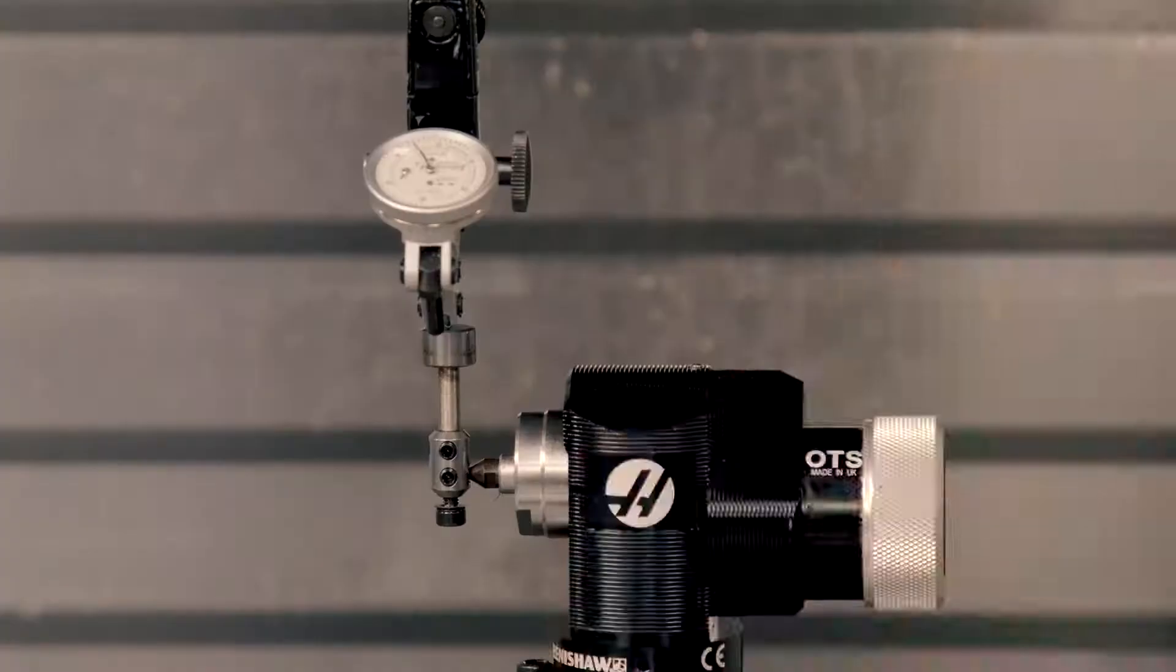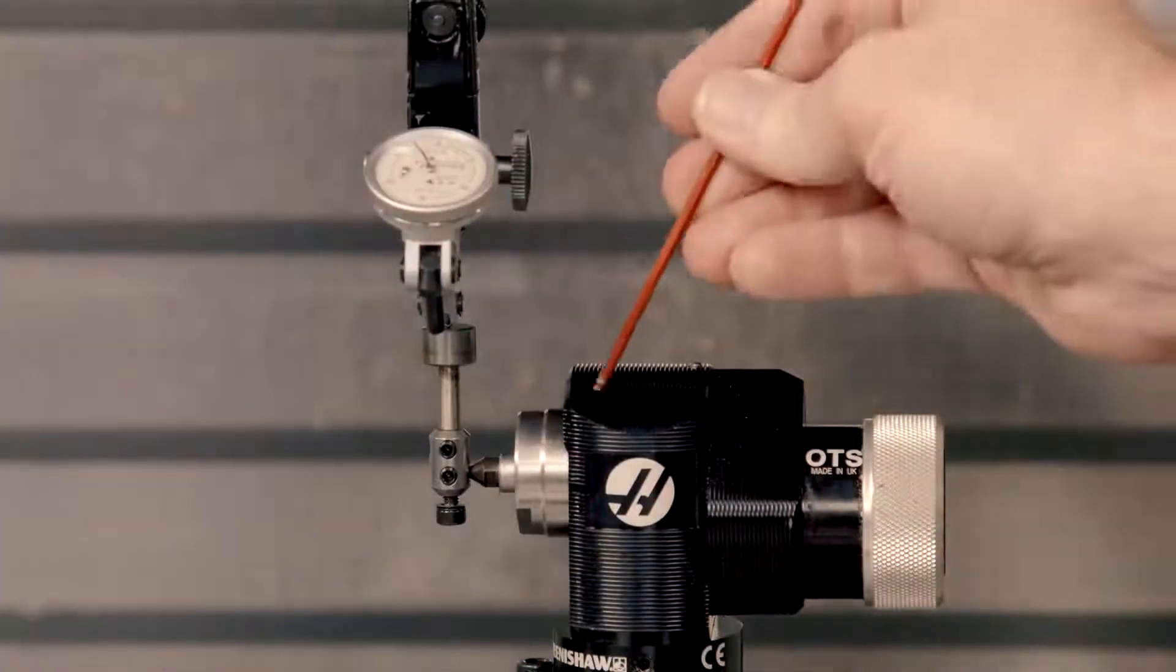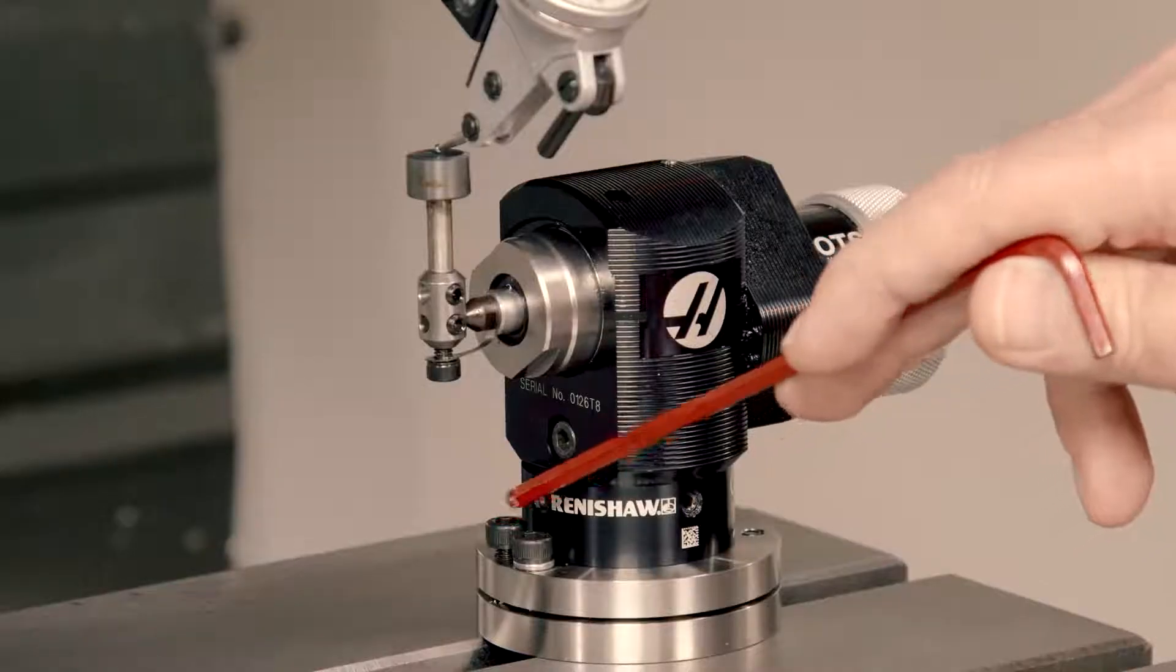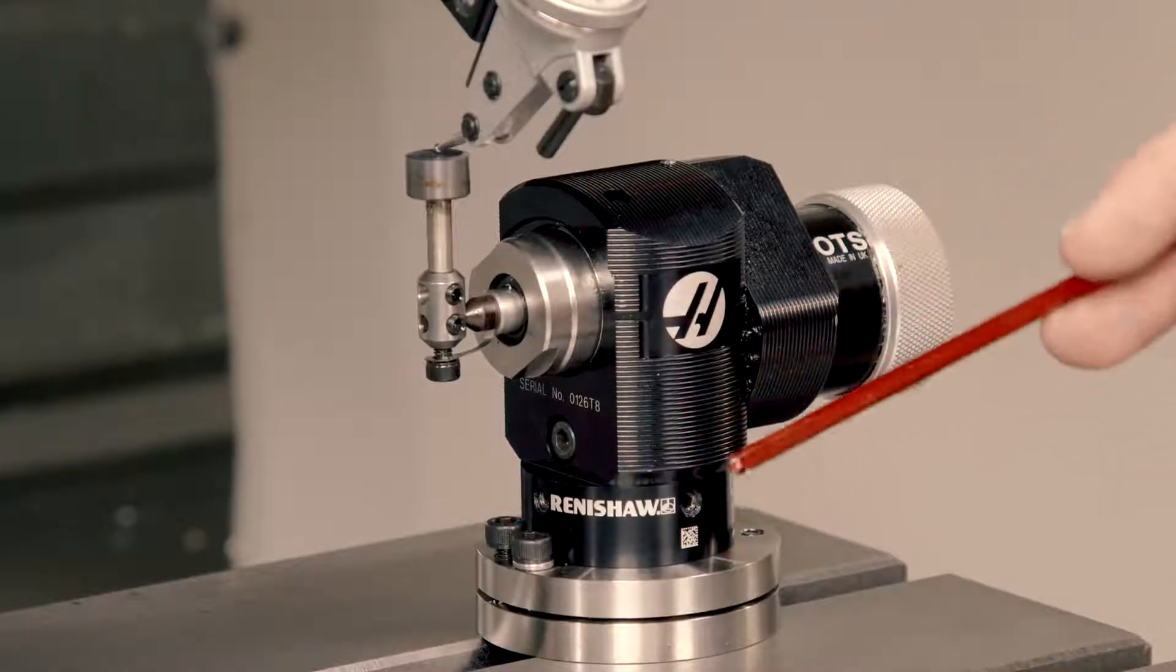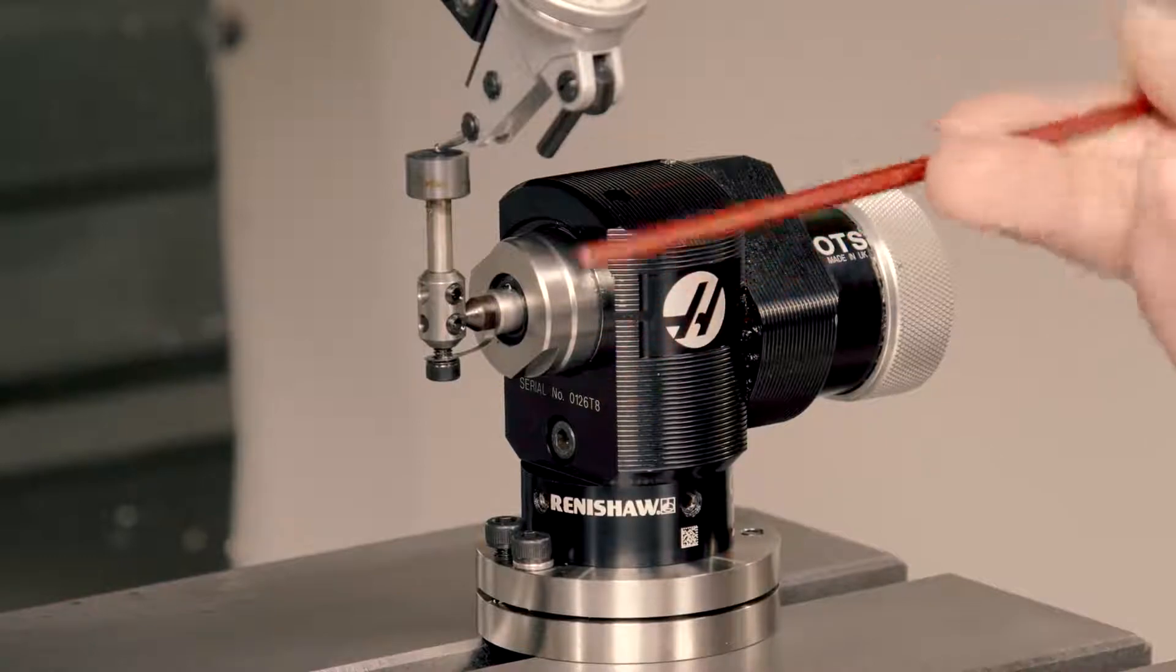Once that's done, we have to be sure to line up our probe stylus again. We use those leveling screws to level both the Y and the X axis for that. And then we're done.